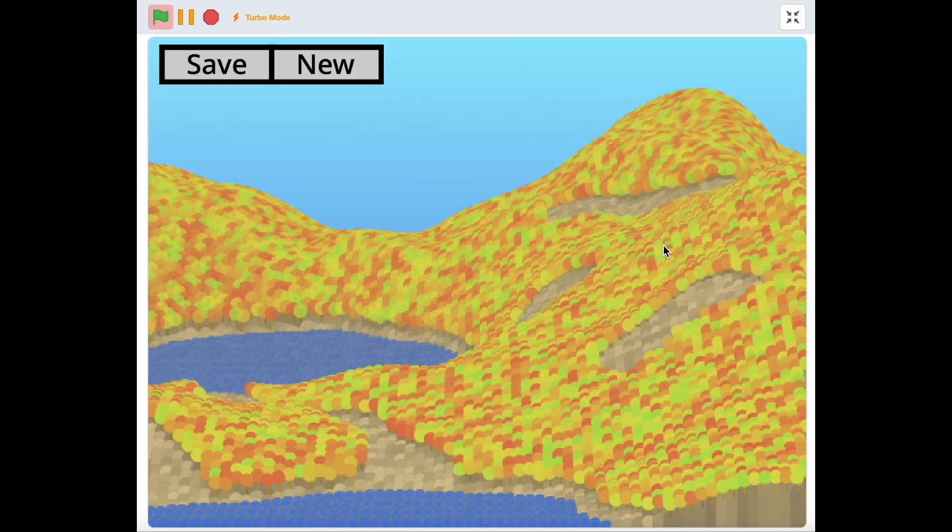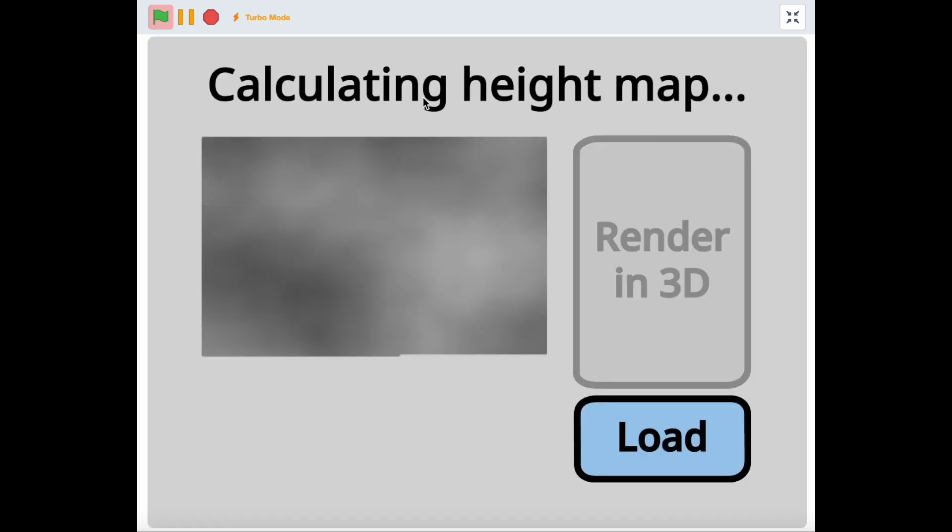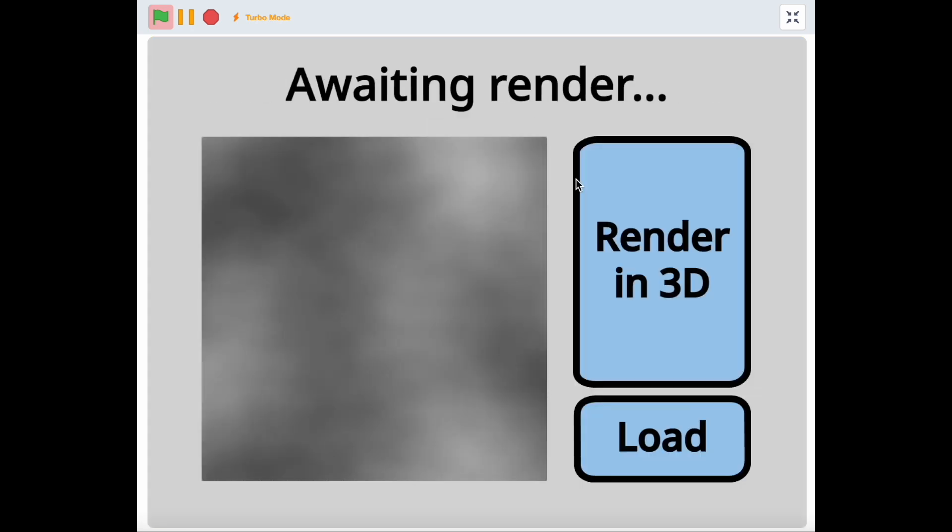But how can it generate a different realistic scene with every run? And what is this unusual blurry map? This project is based on a technique you might have heard of, an algorithm called Perlin Noise.